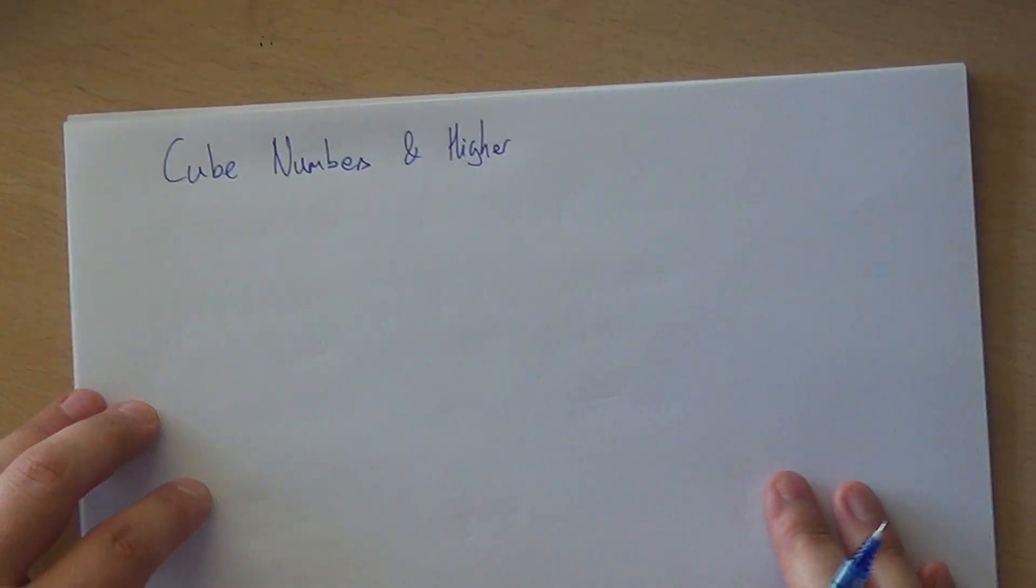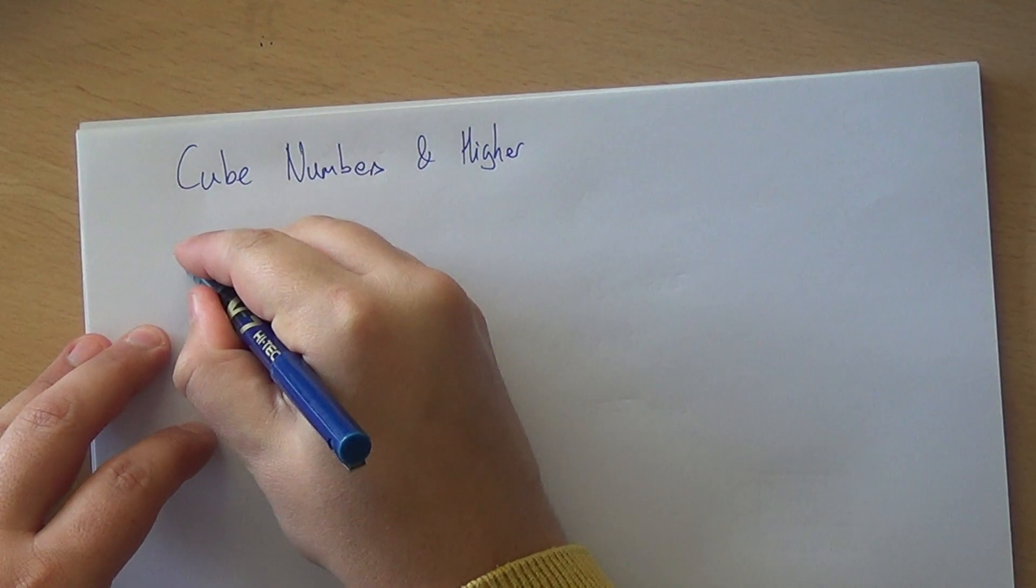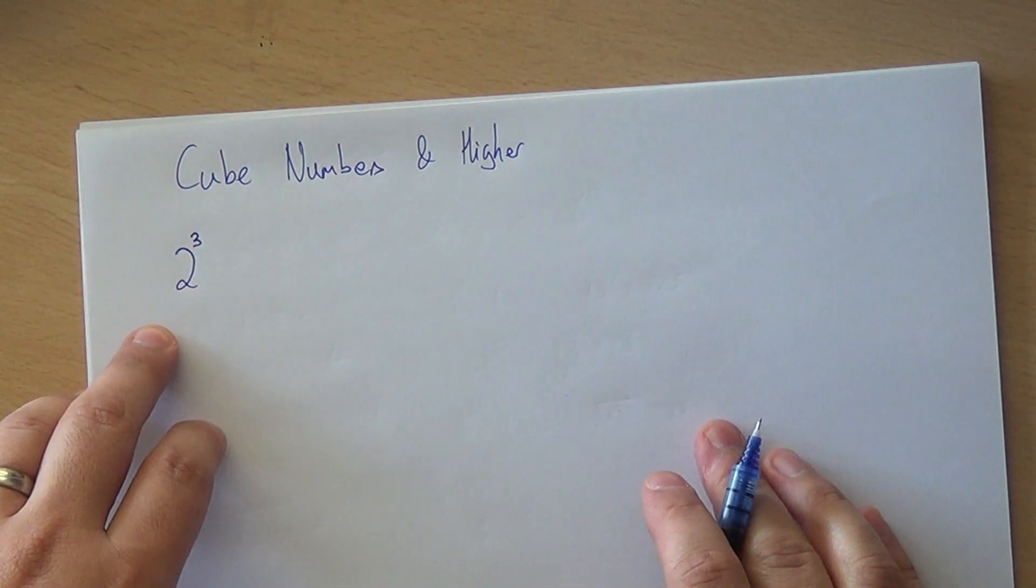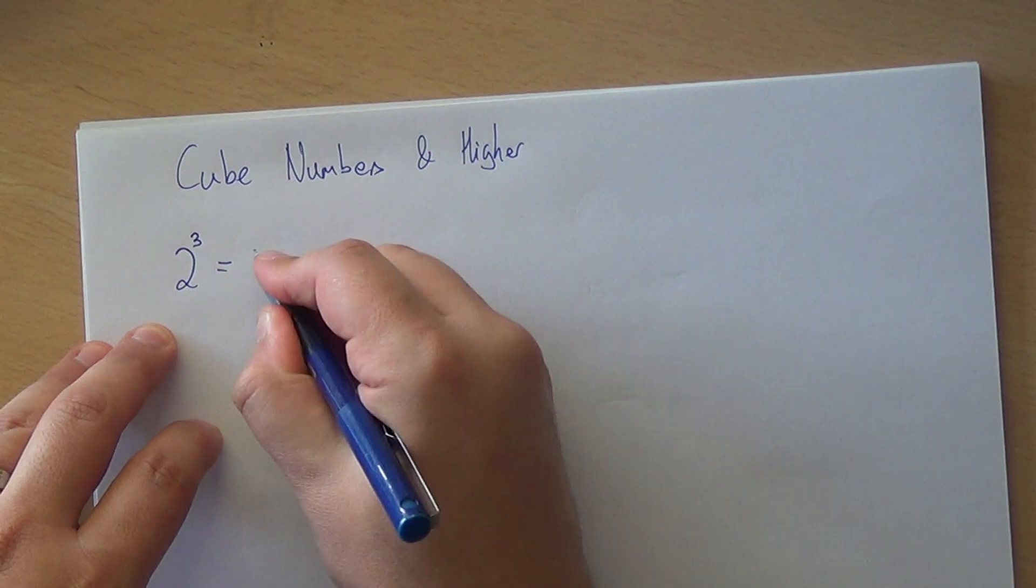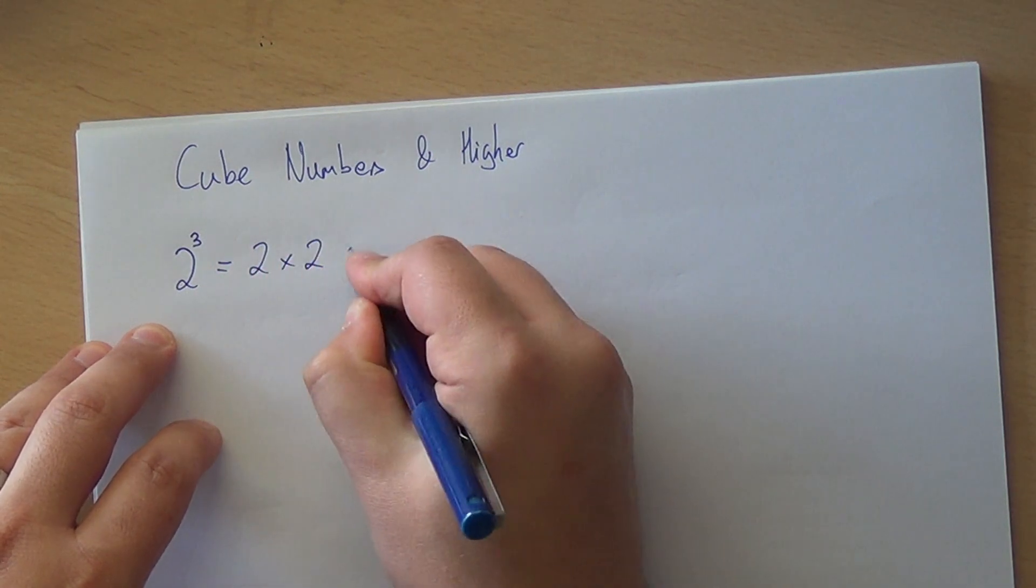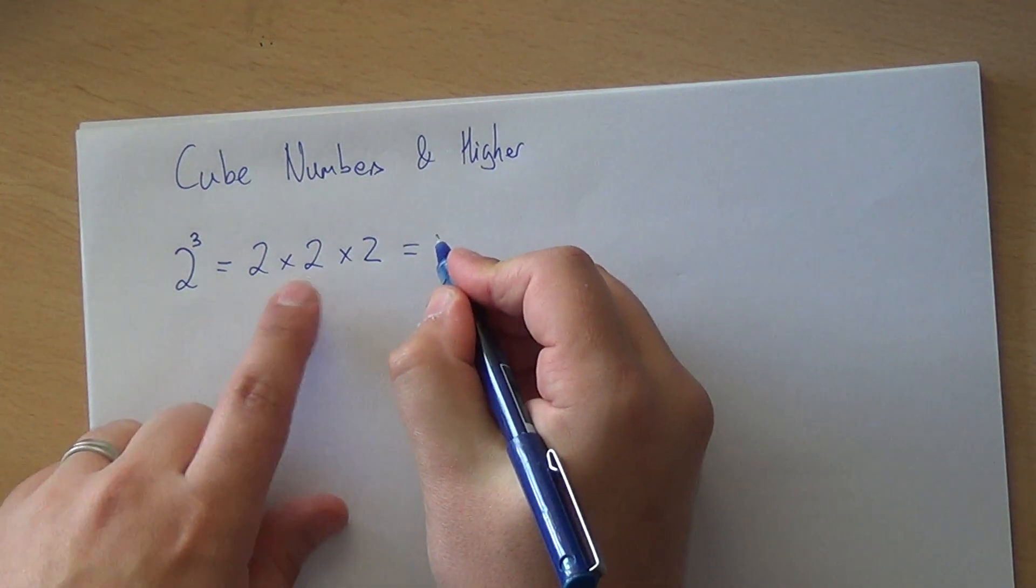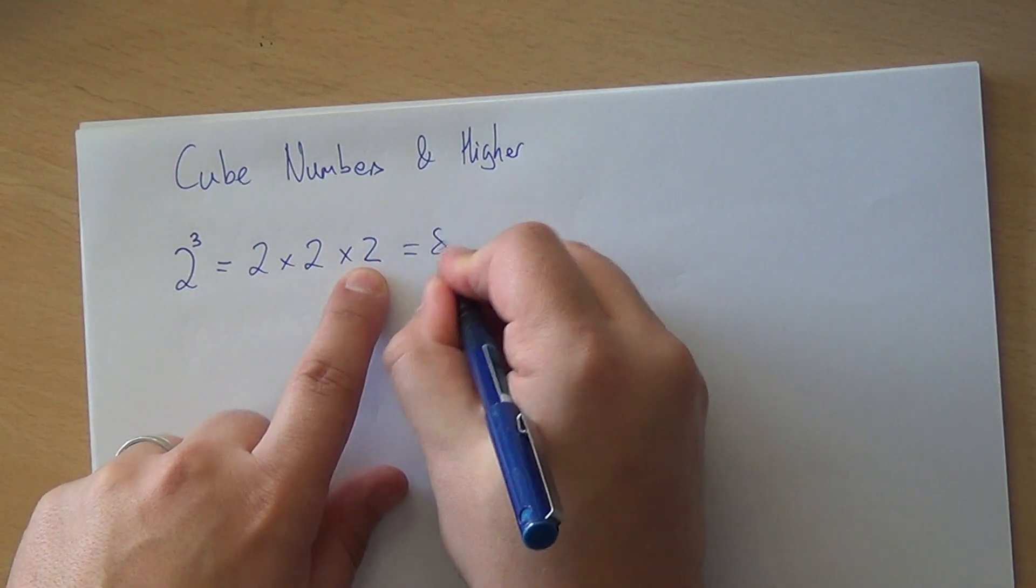We looked at square numbers recently. We're going to now step up to cube numbers. So 2 cubed is written with a little 3 up there, and this means 2 times 2 times 2. We work that out: 2 times 2 is 4, times 2 again is 8.